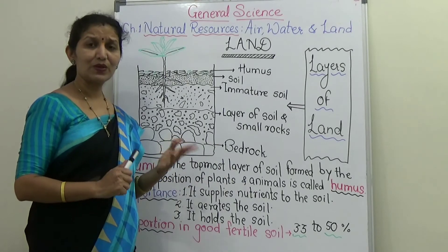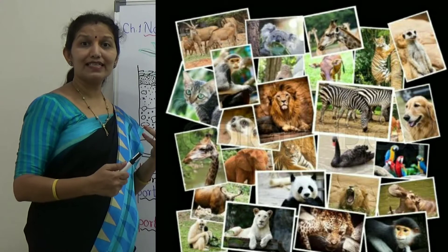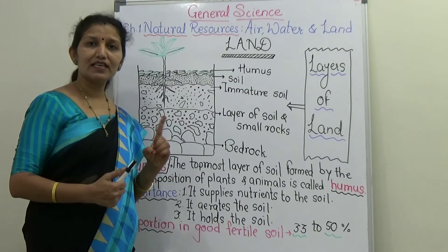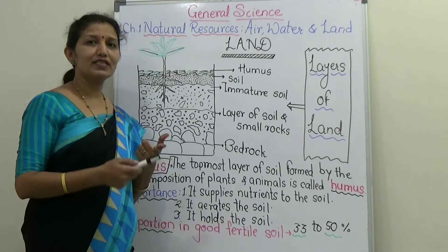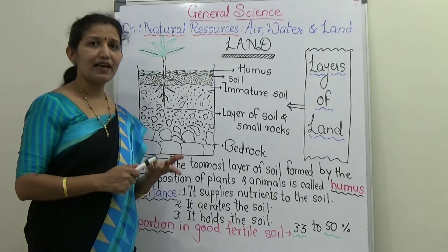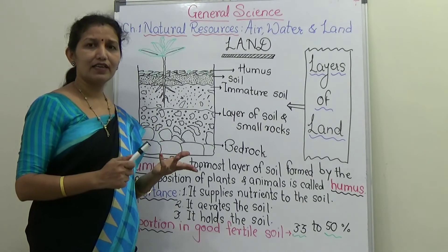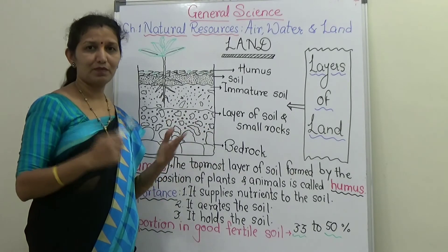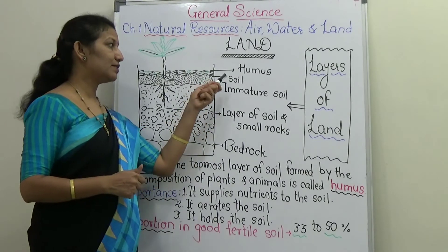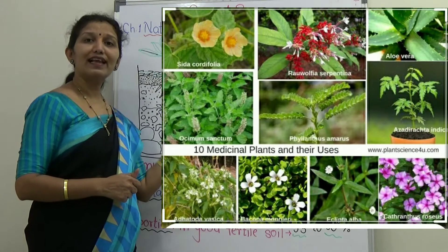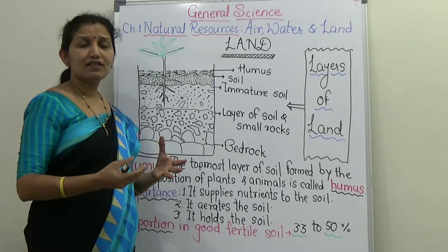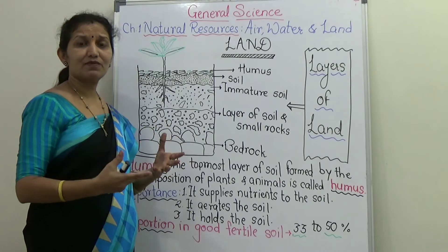Animals are also very important. They give us leather, flesh, and meat, and are used for many purposes. We can also get medicinal plants from the land. In this way, land and its resources are truly treasures for us.